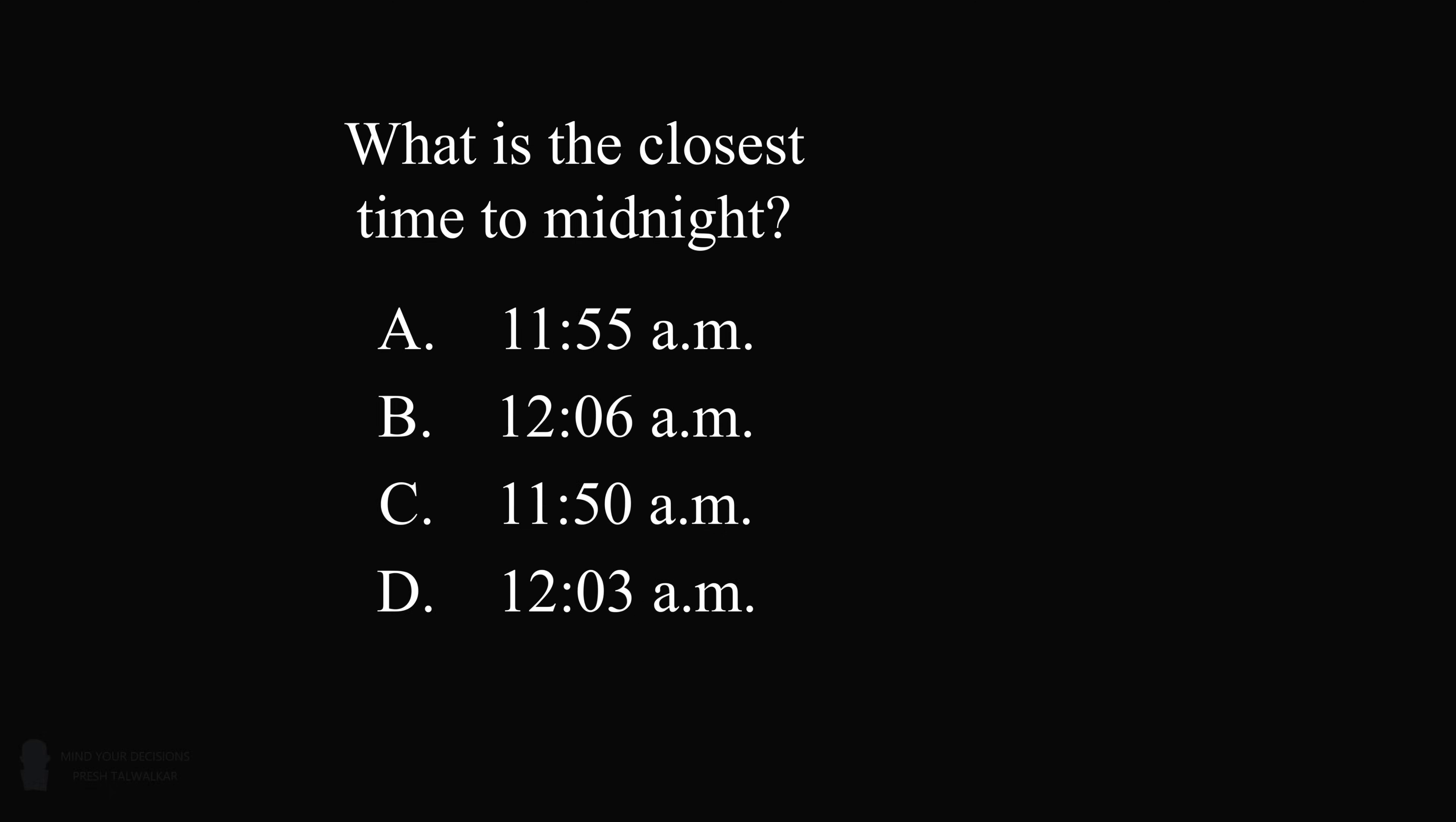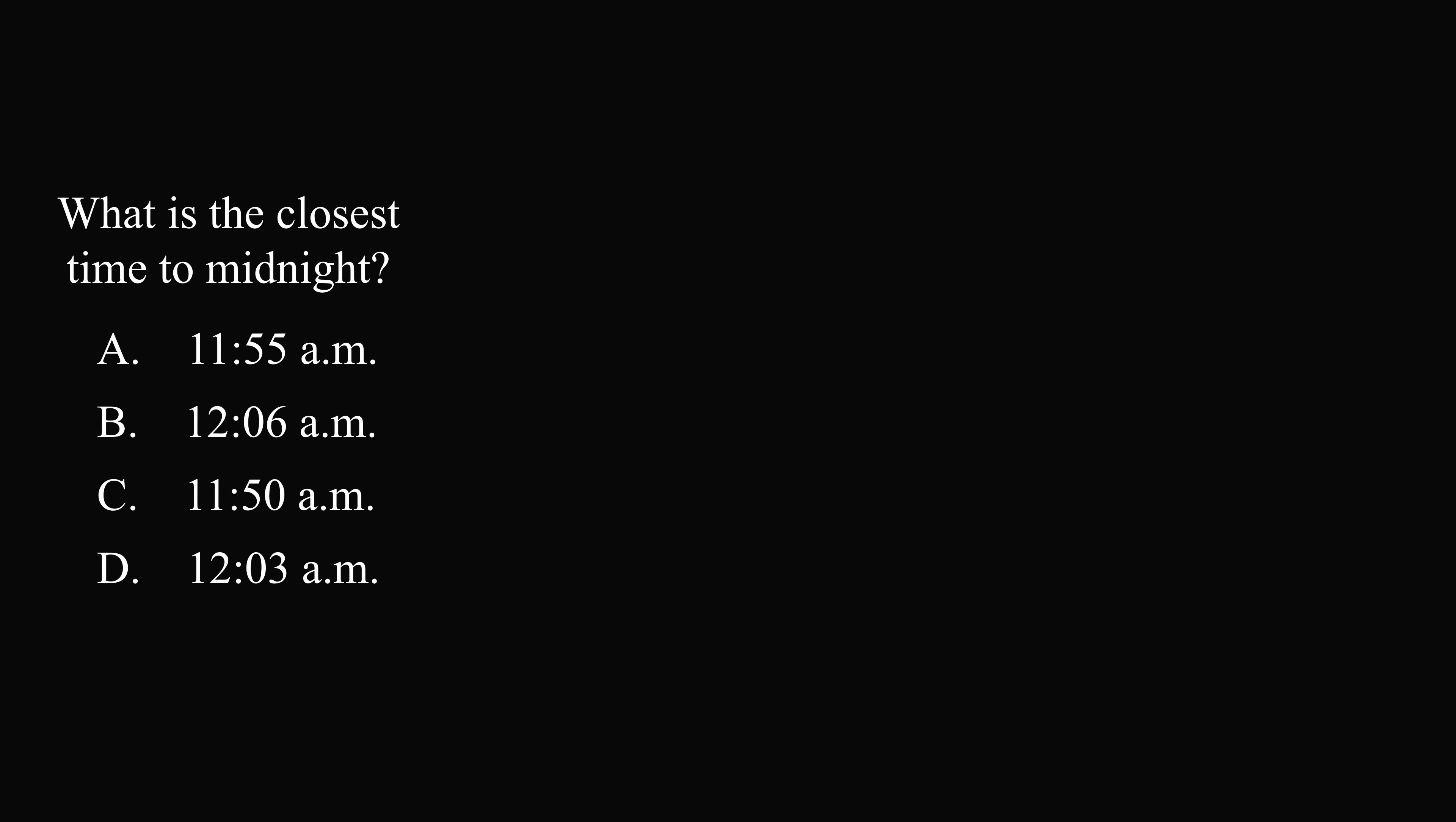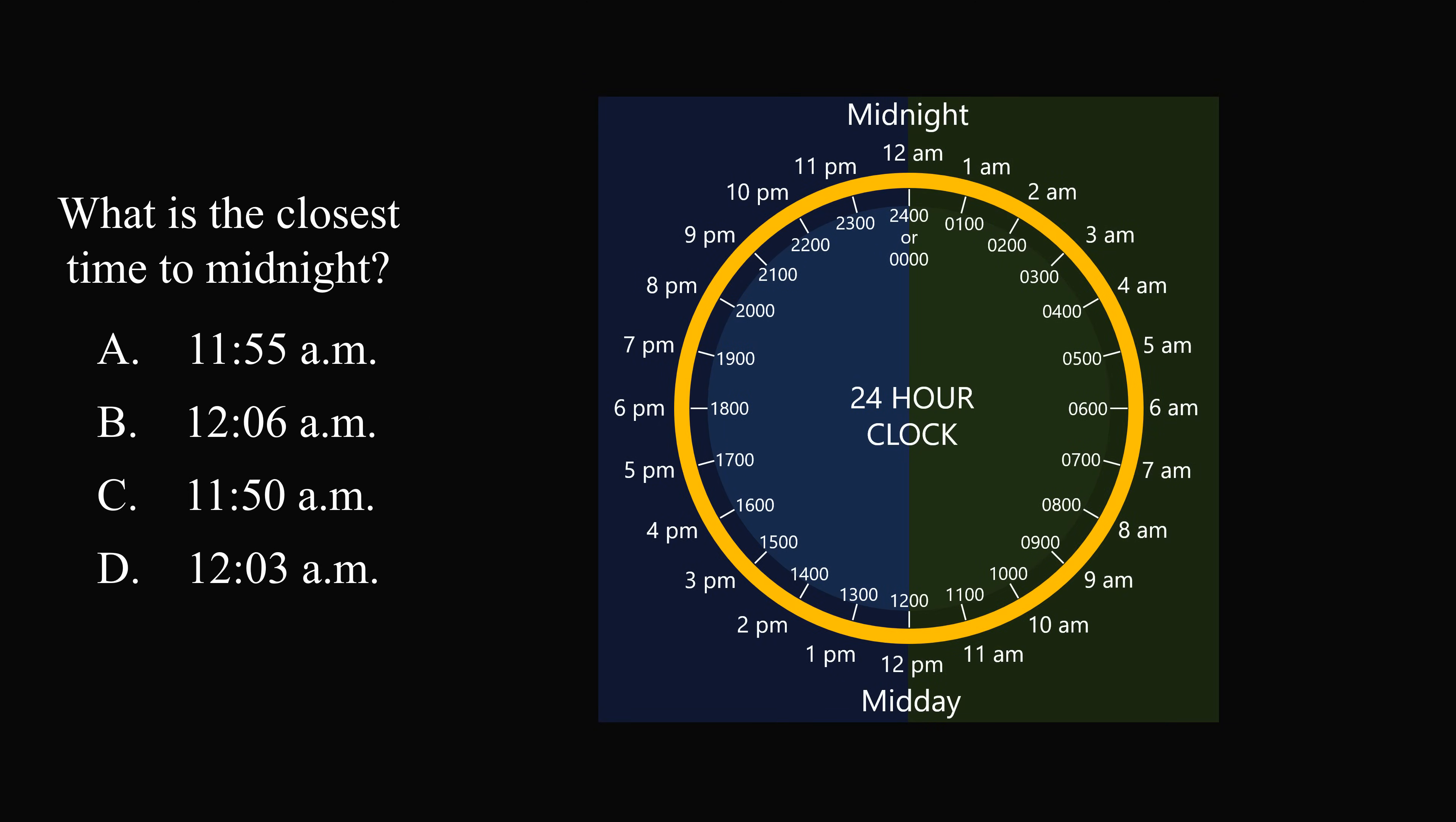So I think a useful visual to work this out is to use a 24-hour clock. We have midnight at the top, then we have 12 hours, and then we have 12 noon or midday at the bottom, and then we have another 12 hours back to midnight. In military time, we have 0 hundred hours, then 100 hours, going down to 1,200 hours. Then we go back up to 2,300 hours, and then 2,400 hours, which is the same as 0 hundred hours.